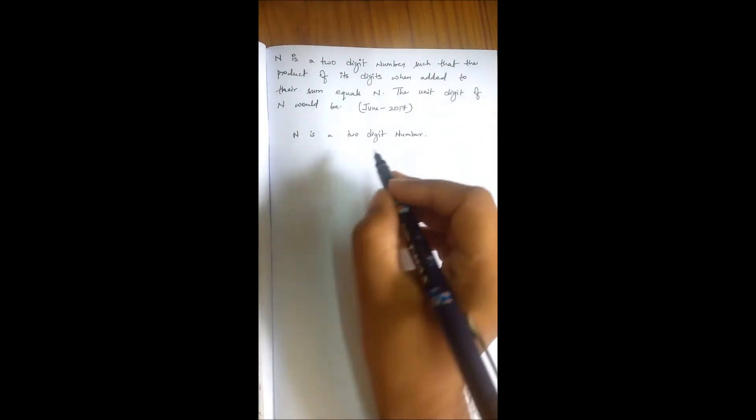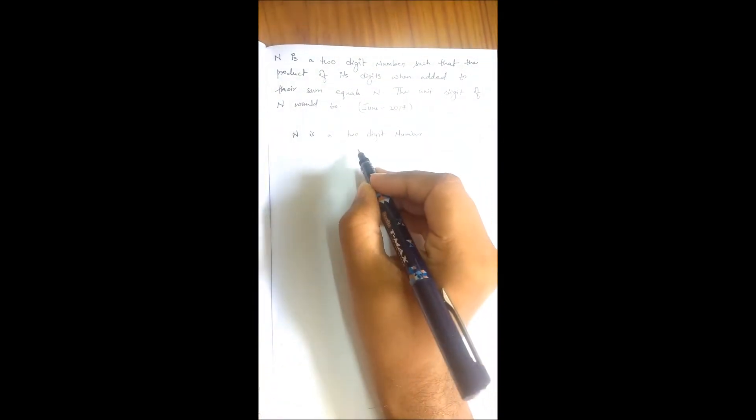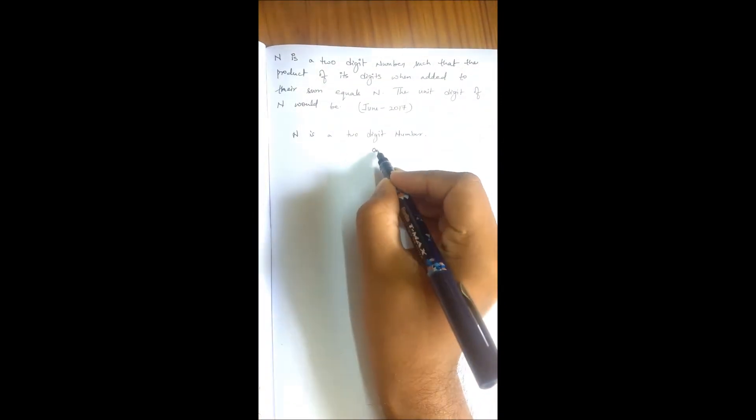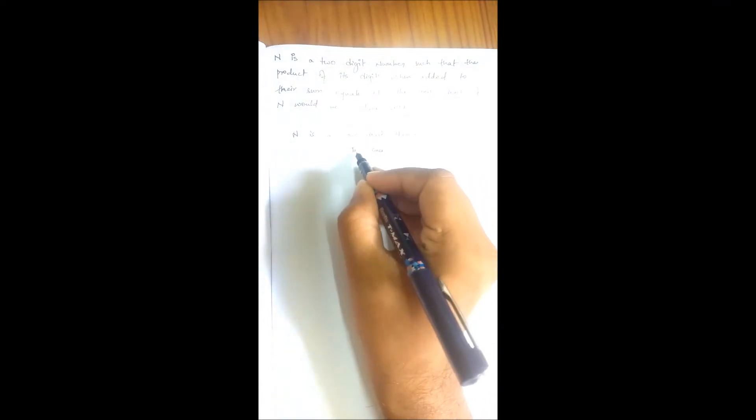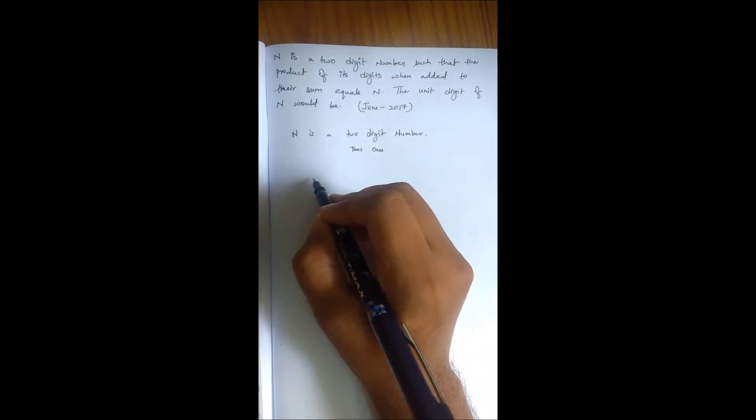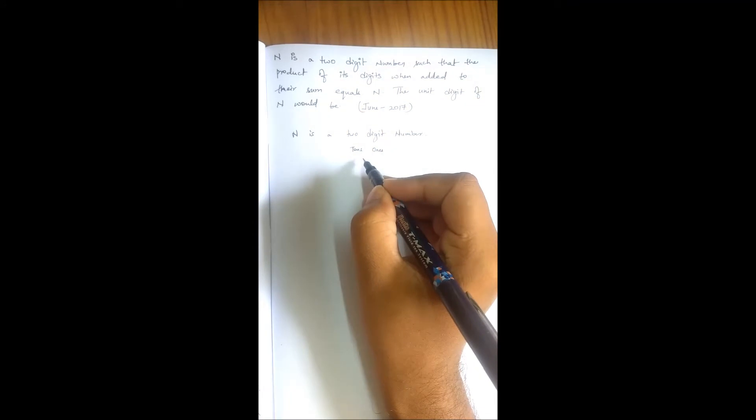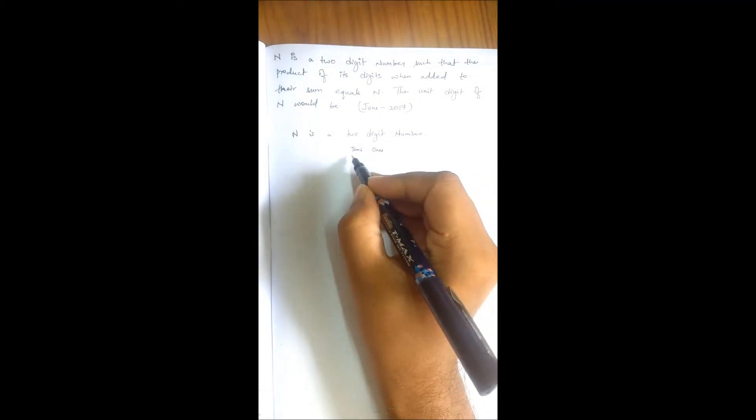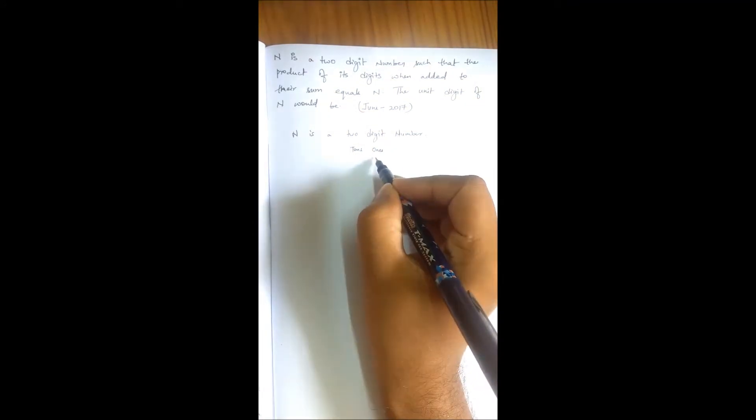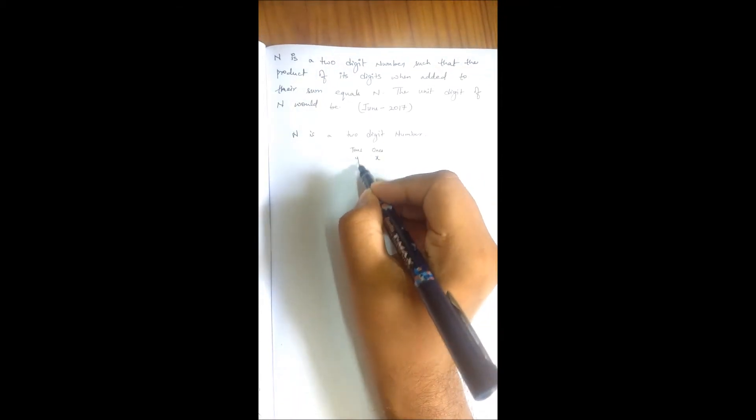We all know that a two-digit number contains two digits, one at one's place and another at ten's place. So for our convenience, let's take that number at one's place to be X and the number at ten's place to be Y.